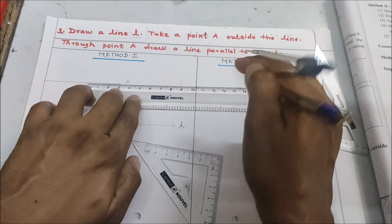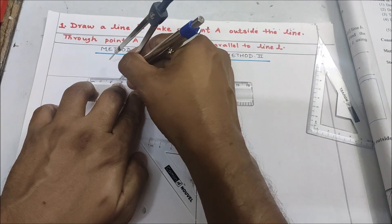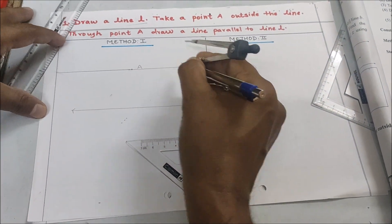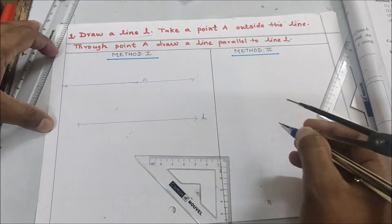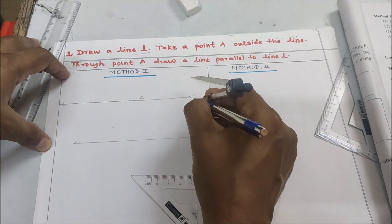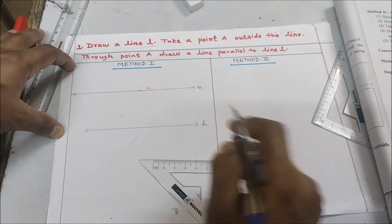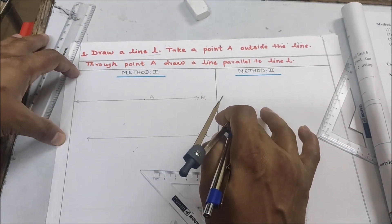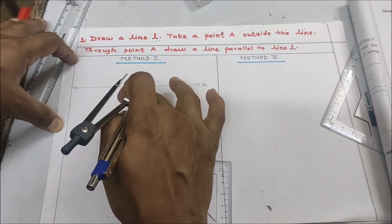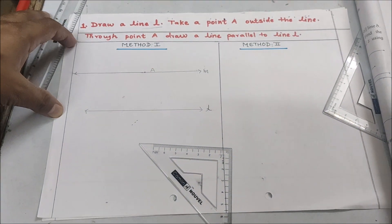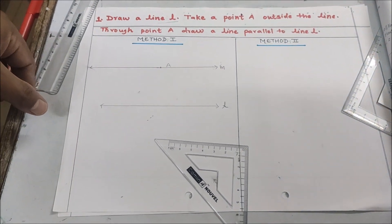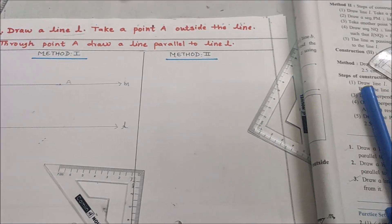You can see we got a line. Now we will extend this line with the help of a ruler — a line can be extended because it has no fixed length. This line is named line m, and line m is parallel to l and passing through point A.